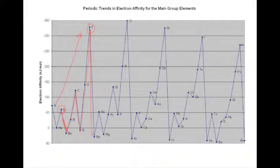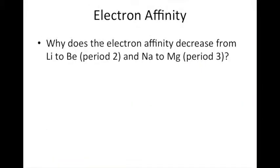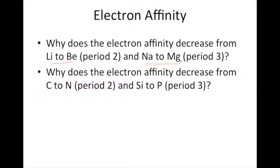Normally it drops between fluorine and neon, which is what we would expect. When we start the third period, from sodium to magnesium there's a drop, it increases, and then between silicon and phosphorus it drops and continues on. This tends to play out throughout the periodic table. So why does the electron affinity decrease between lithium and beryllium in period two, sodium and magnesium in period three, and between carbon and nitrogen in period two, and silicon and phosphorus in period three?